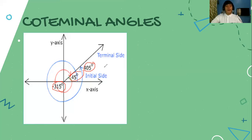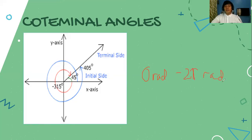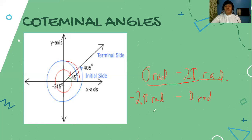In the same way, every radian measure also has equivalent coterminal angles, which should also be expressed in radian measure. The range for a positive coterminal angle must be between 0 radians to 2pi radians, and for a negative coterminal angle, it must be between negative 2pi radians to 0 radians. A positive rotation is counterclockwise, and a negative coterminal angle rotates in the clockwise direction.